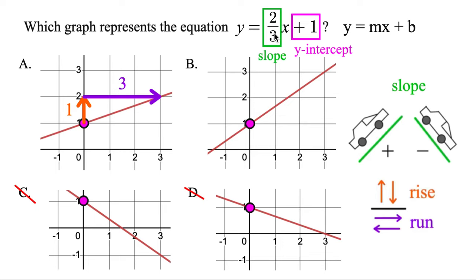Of course, we wanted two-thirds, so we know it's going to be B — but let's just double check. We go from this point to where we cross perfectly. We go up one, two, then to the right one, two, three. That gives a rise over run of two-thirds, and that's what we wanted.